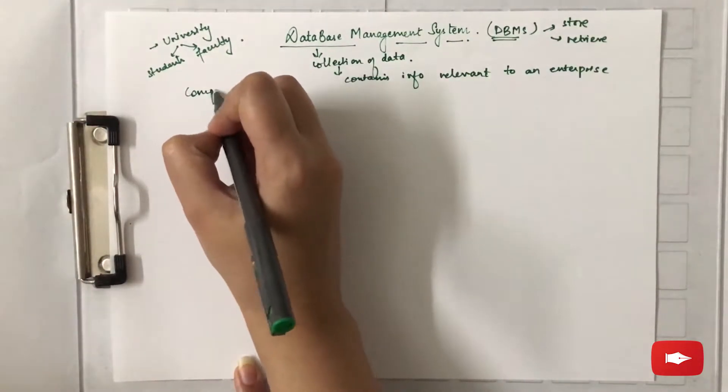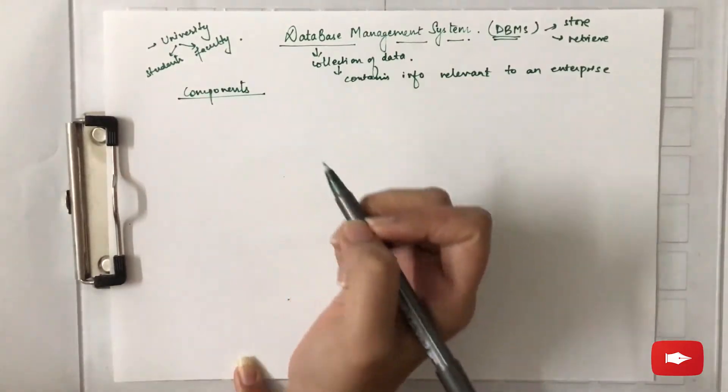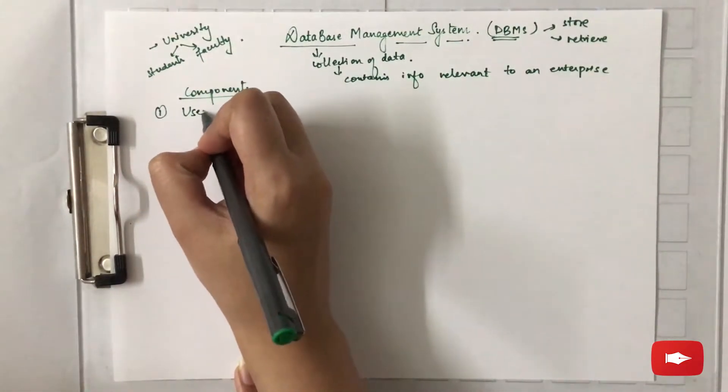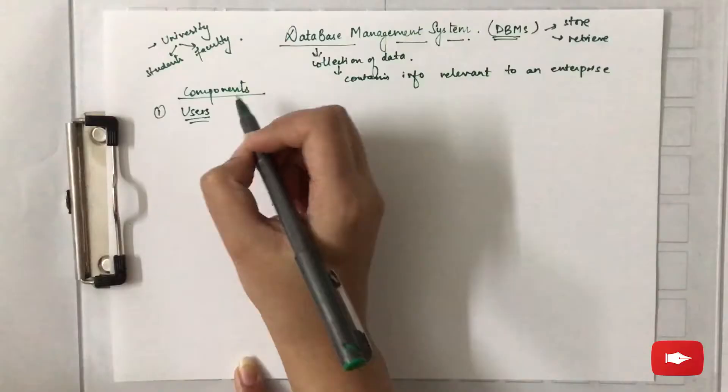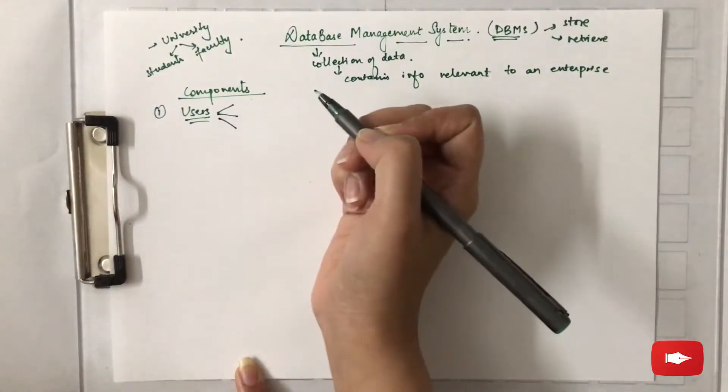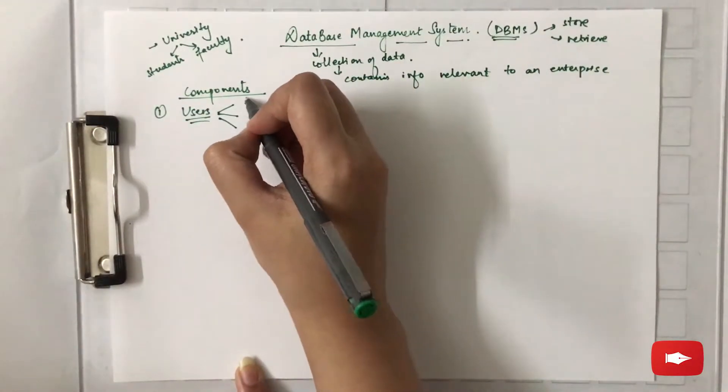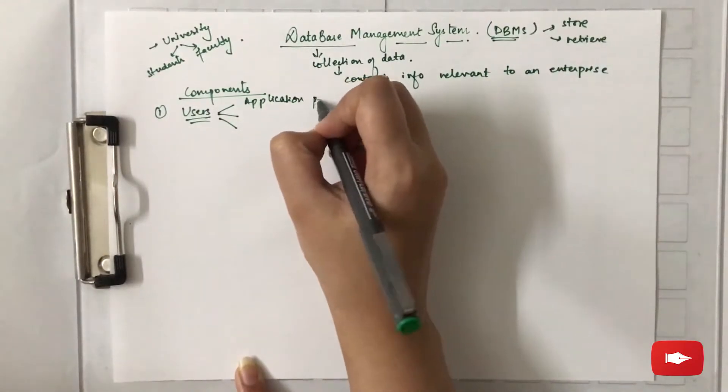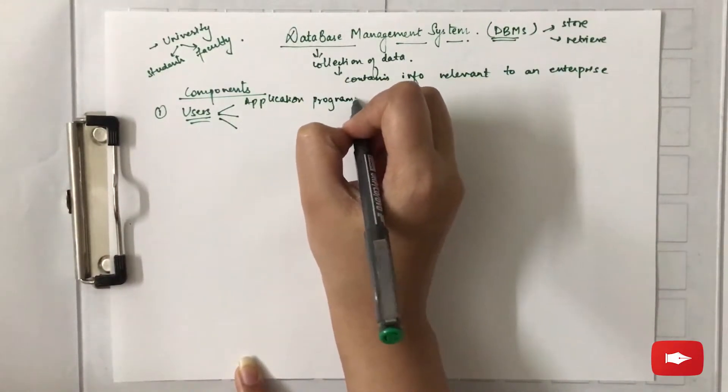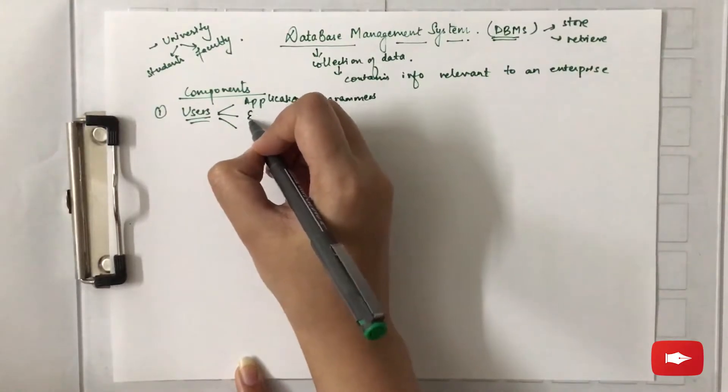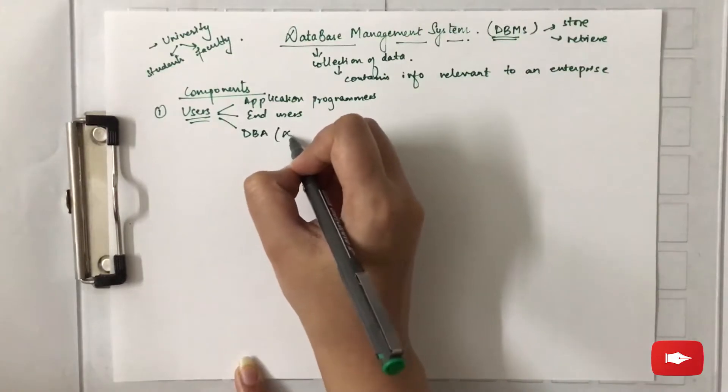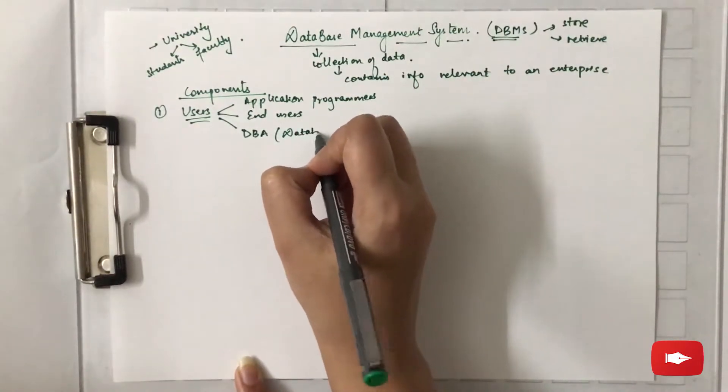Now what are the components of DBMS? It has four components. First one is users who use the DBMS. There are three categories of users: one is application programmers, second is end users, and third is DBA, that is database administrator.